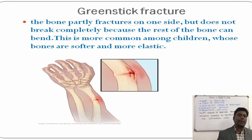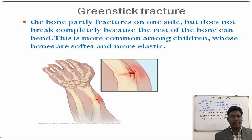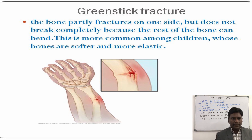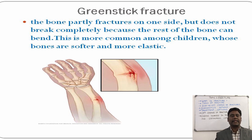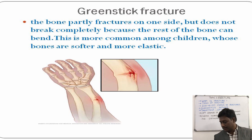Greenstick fracture occurs commonly in children whose bones are very soft and elastic. Here, one side of the bone may be broken whereas the other side of the bone will stay intact.